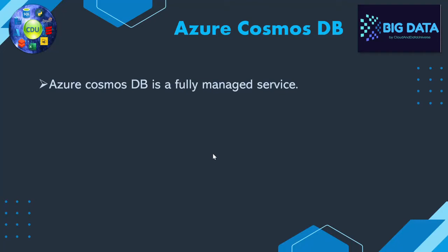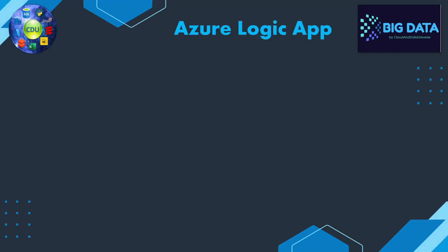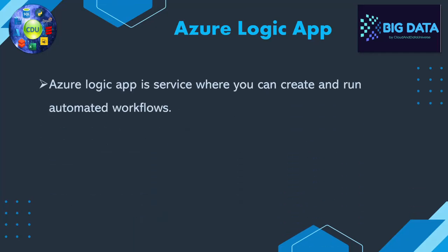Next is Azure Cosmos DB. It is a fully managed, NoSQL database service — somewhat like HBase in Hadoop. One of its greatest features is millisecond response time, and it is scalable, meaning you can increase or decrease resources as needed.